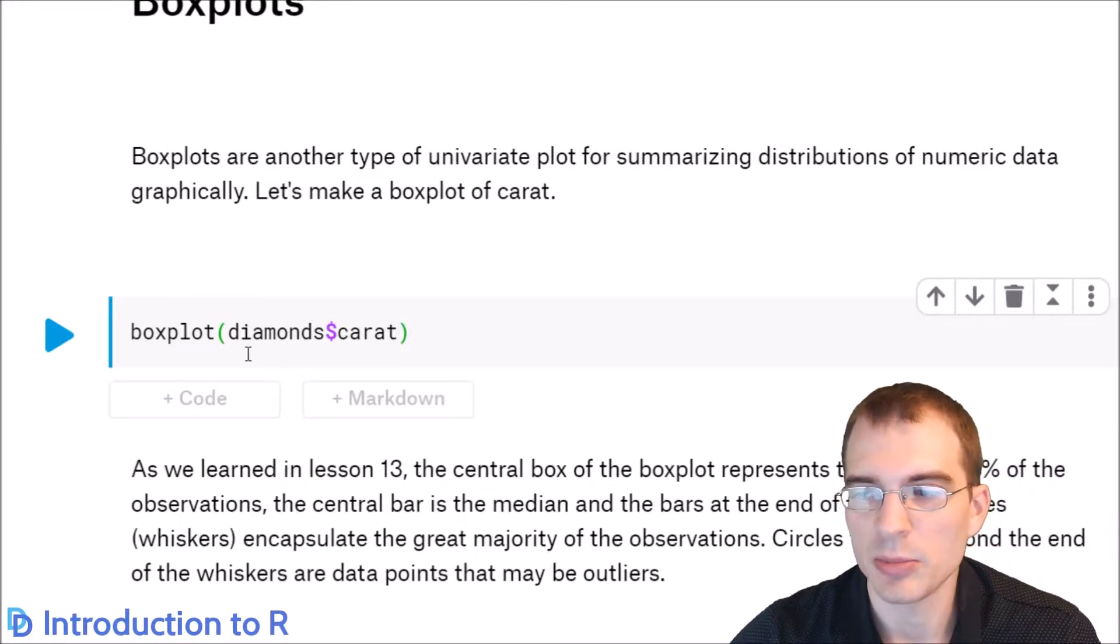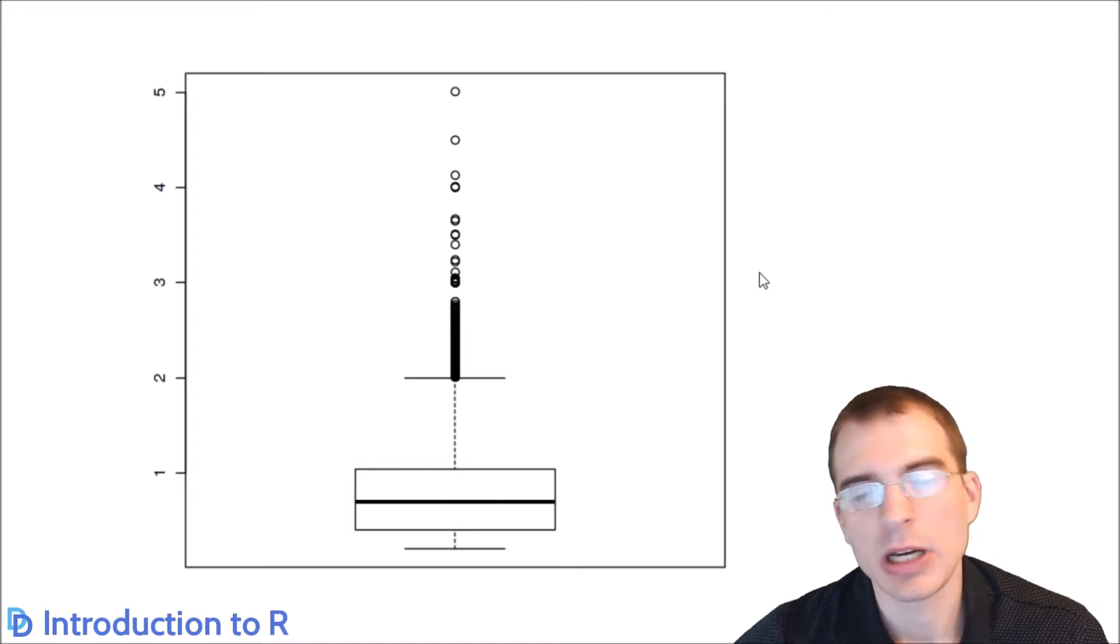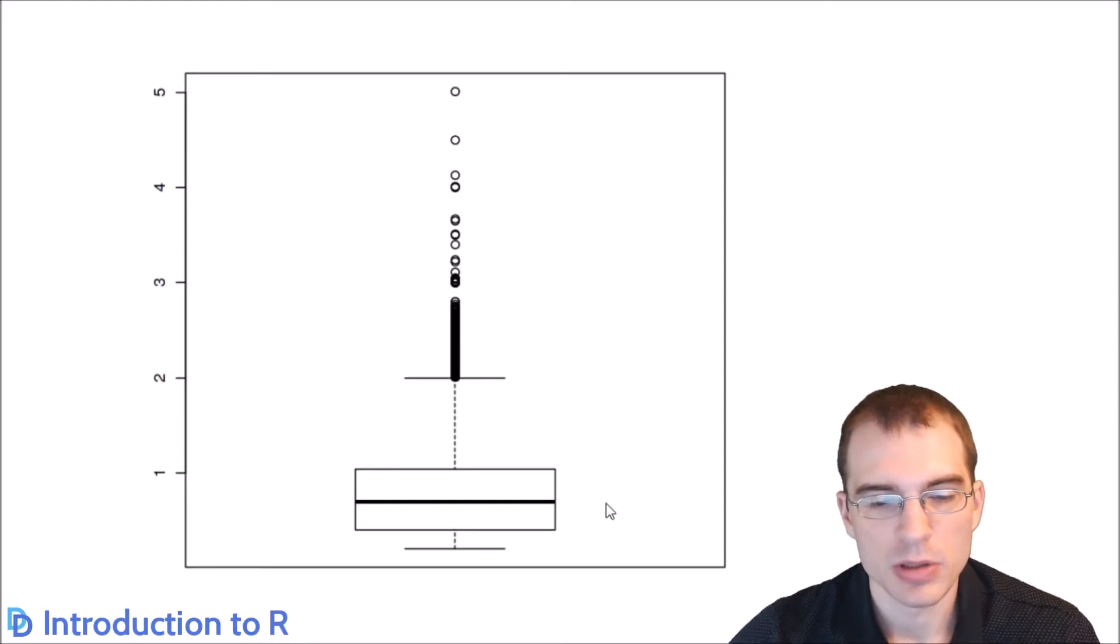To do a box plot in base R, you just use the box plot function. Again, you pass in a variable to make the box plot for. We'll do carat again so we can look at it. So the main purpose of a box plot is to show you where the majority of the data lie and to give you a sense of whether there are any outliers as well.